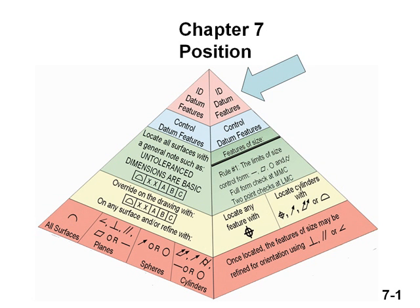Point out that this chapter deals with locating features of size. Use the GD&T Hierarchy Pyramid to introduce the chapter by saying, once datum features have been identified and controlled, you have to locate the other features.